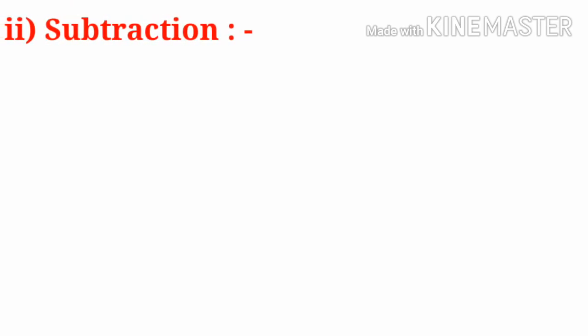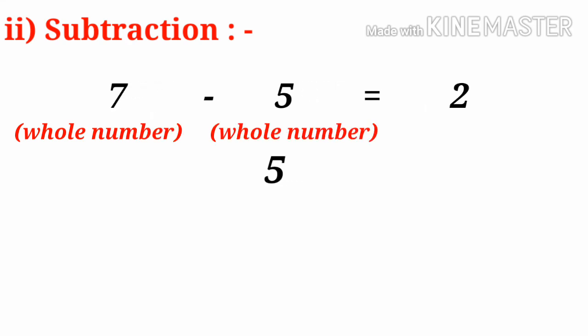Now, take Operation Subtraction. 7 minus 5 equals 2, where 7 is a Whole Number, 5 is a Whole Number, and 2 is also a Whole Number. But if we subtract 7 from 5, is it possible? Not.